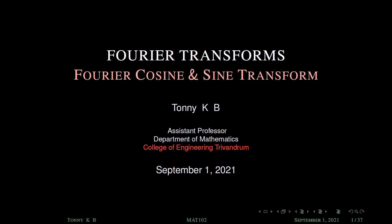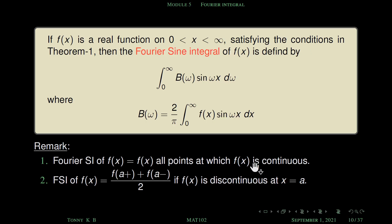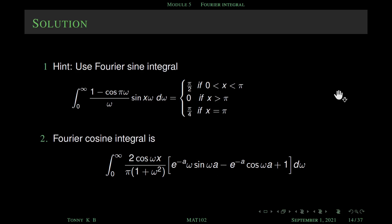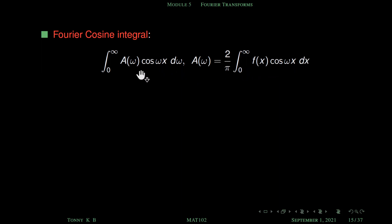This is Fourier cosine transform and sine transform. In the last session we saw Fourier cosine integral and Fourier sine integral. These are the solutions of last homework. The Fourier cosine integral means if a function f satisfies some conditions, we can find an integral representation like the integral from 0 to infinity of A(ω) cos(ωx) dω, where A(ω) is given by a specific formula. This is the Fourier cosine integral.